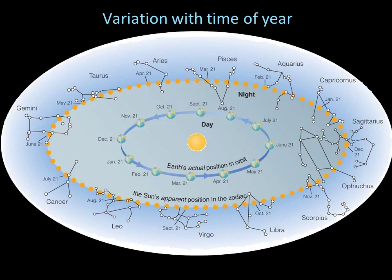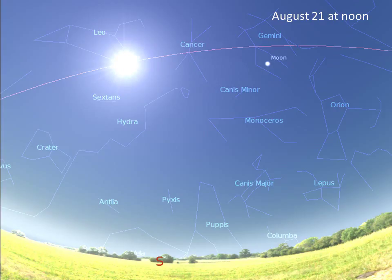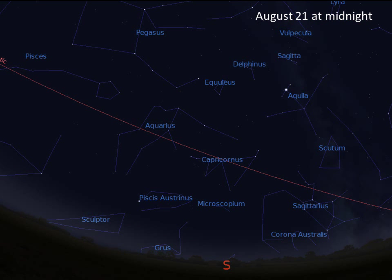The night sky changes throughout the year because of Earth's changing position in its orbit around the sun. As Earth orbits, the sun appears to move steadily eastward along the ecliptic through different constellations. For example, during the day in August, if we could see the stars when the sun was out, we would see that the sun is in the constellation of Leo. At night, we're facing the opposite direction and Aquarius is high in the sky. On August 21st at noon from Rockville, the sun is indeed in Leo; at midnight, Aquarius — opposite Leo on the celestial sphere — is out all night long.